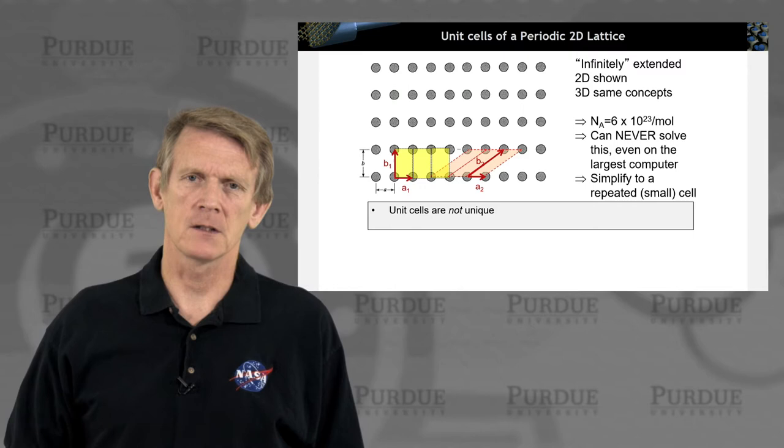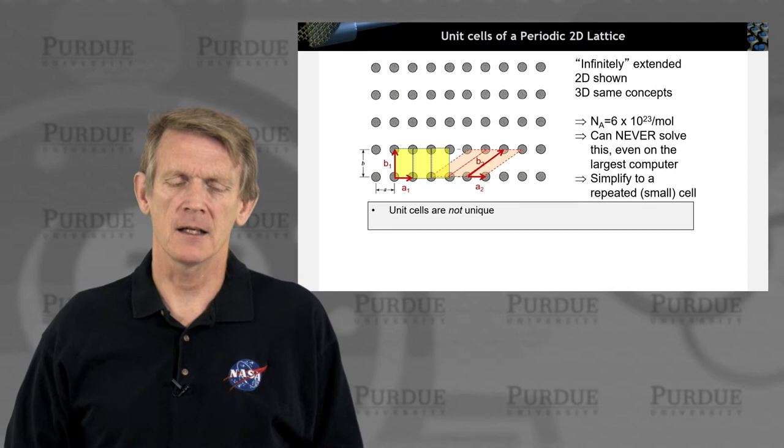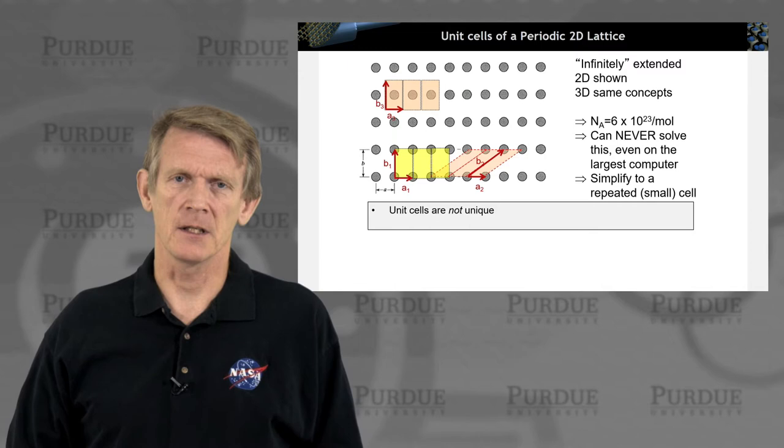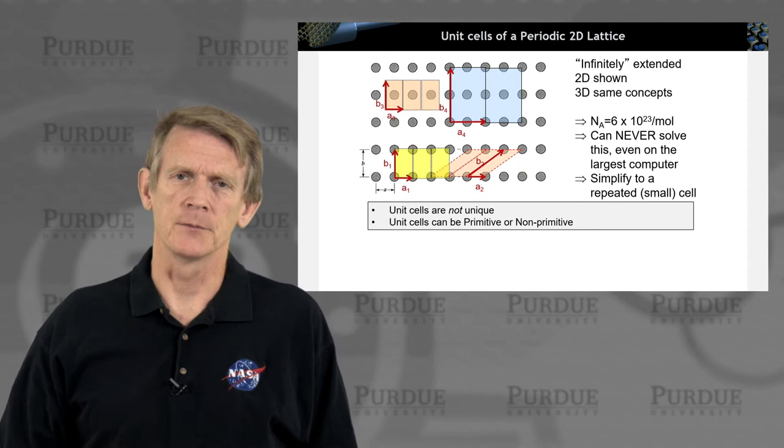With those two vectors and their definition, you can reach every single atom in this 2D lattice here. Now, you could use a different unit cell, one that's angled like this, and you can achieve the same thing. You can reach every atom with these two basis vectors in the unit cell. So the point is these unit cells are not unique. They could be also as simple as having the atom in the center like that.